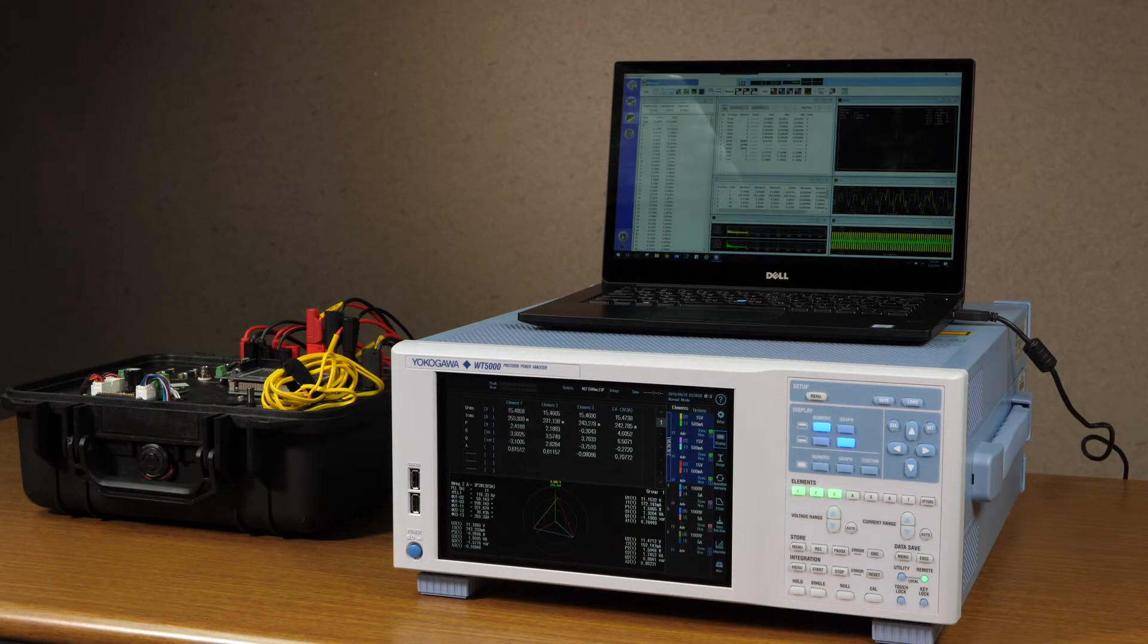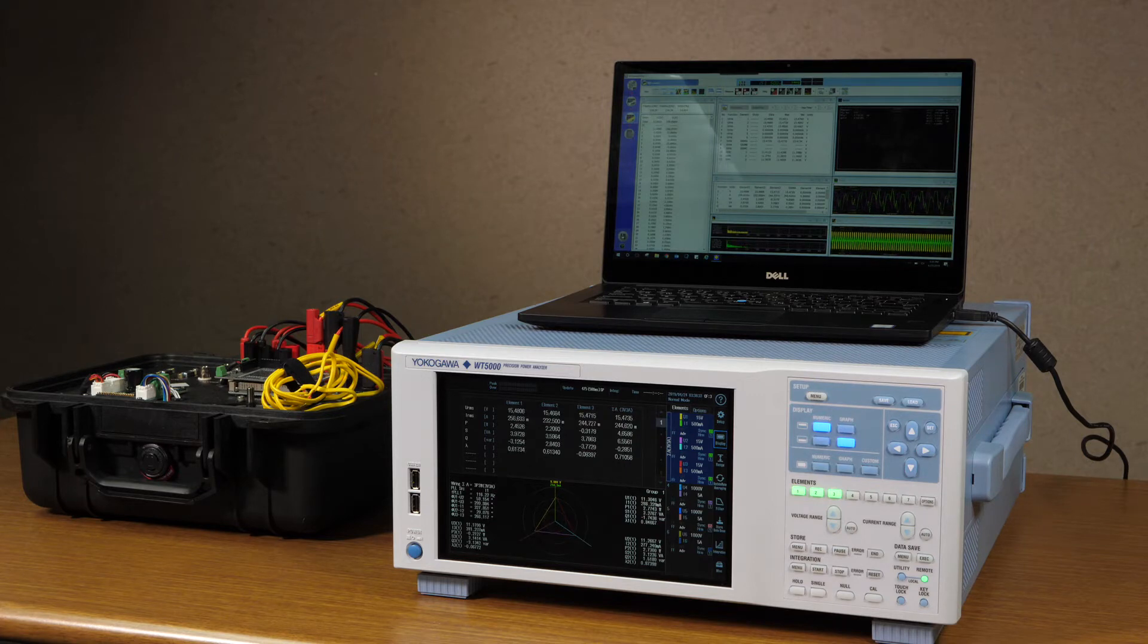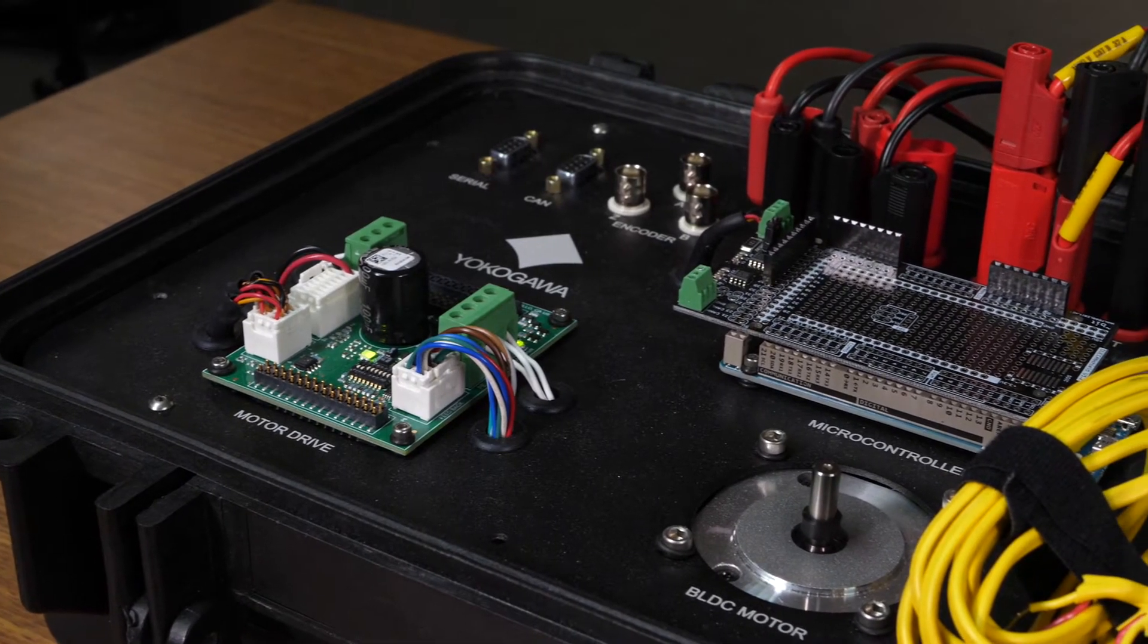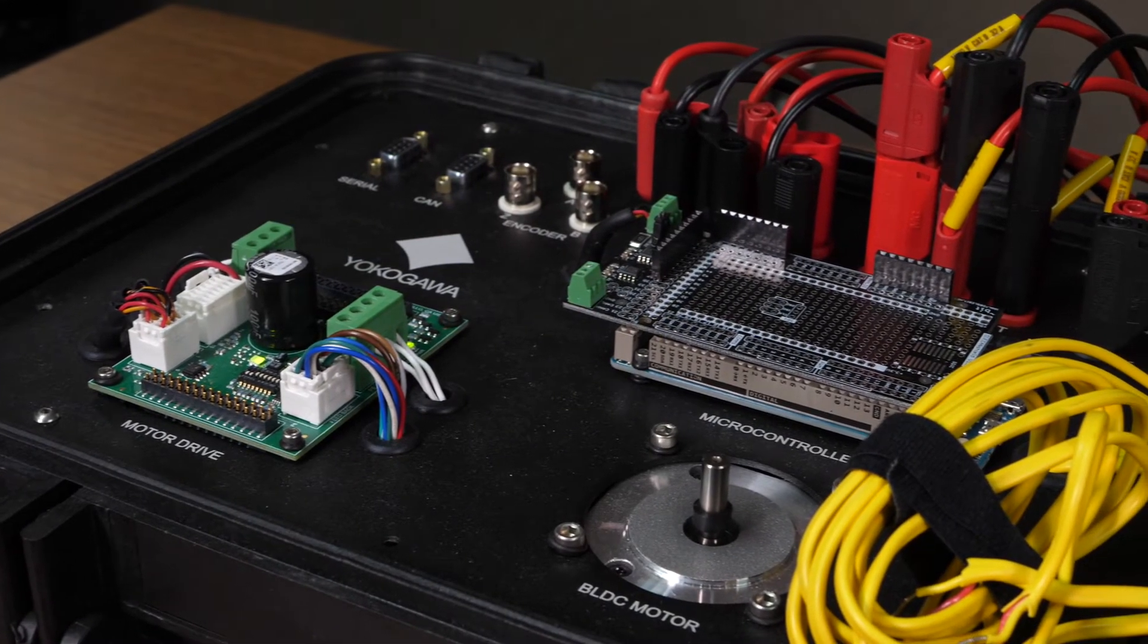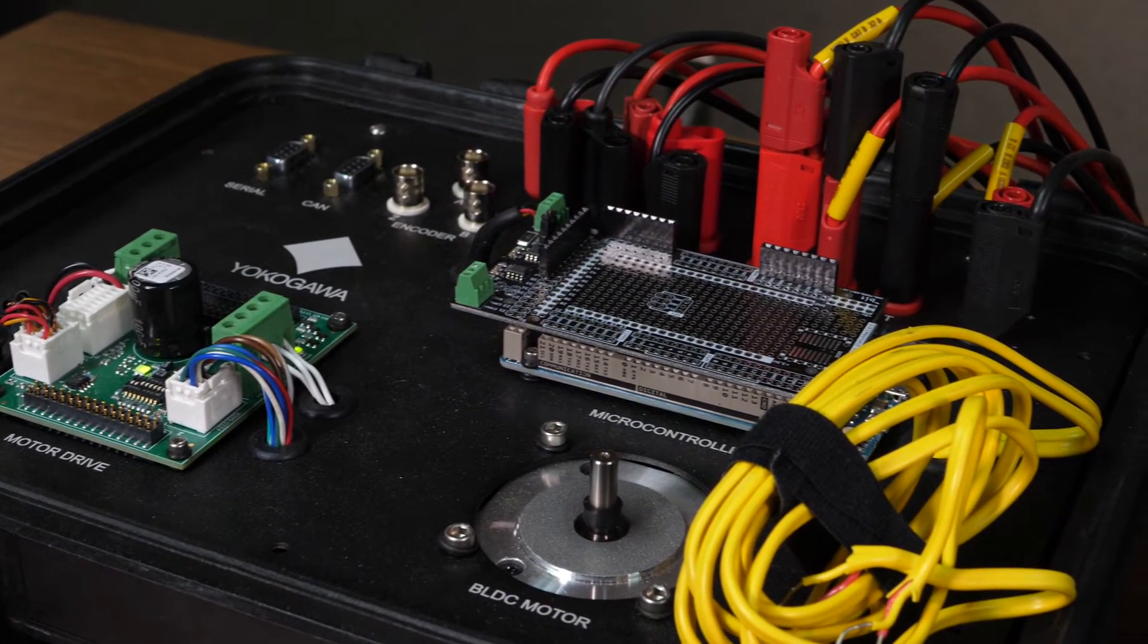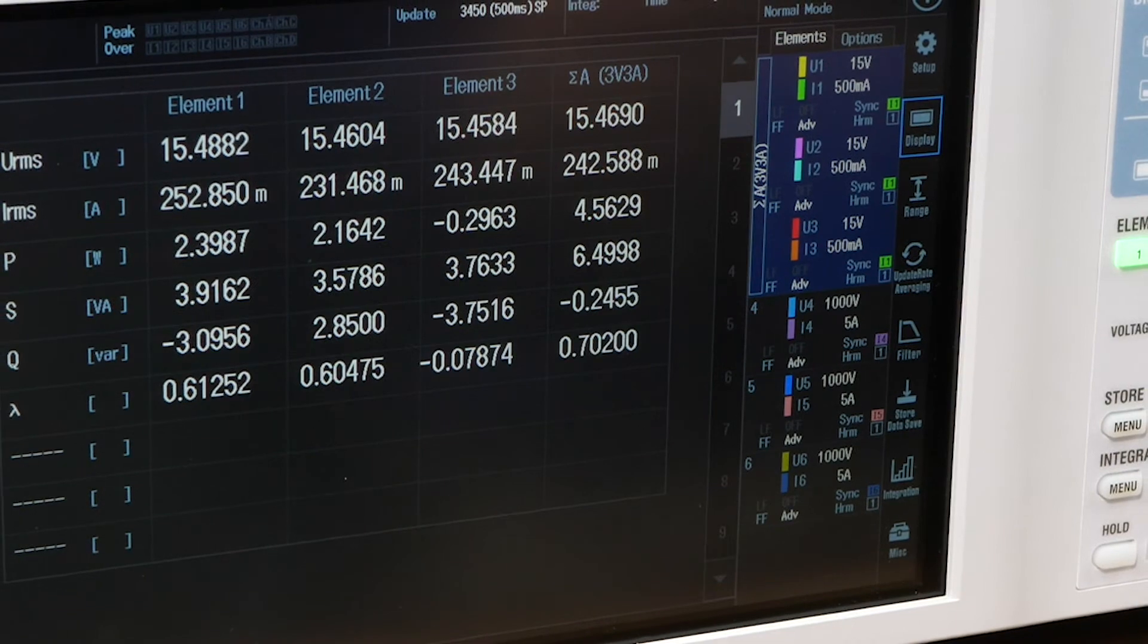Here we have a Yokogawa WT5000 and a three-phase motor that we have set up for demonstrations. This three-phase motor does not have a neutral available to us, which makes it perfect for the 3V3A wiring configuration.